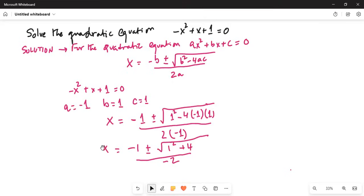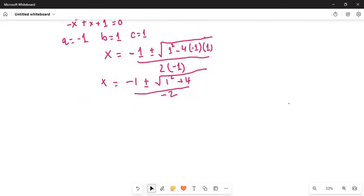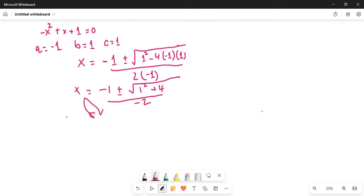So I can write x equals minus 1 plus or minus square root of 1 plus 4, which is square root of 5. This can be simplified as minus 1 divided by minus 2, plus or minus square root of 5 divided by minus 2.